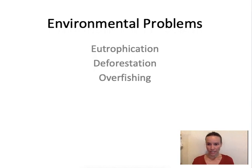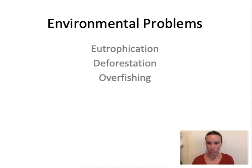Welcome to the next review video for the May 2019 IB ESS exam. Today is Friday, May 17th. I know there's been the history exams and the bio exams, and I hope everyone is getting enough sleep and feeling confident. Your IB ESS exam is coming up really soon, so today I want to go over three general environmental problems that can be used in a lot of different ways on your exam papers: eutrophication, deforestation, and overfishing.